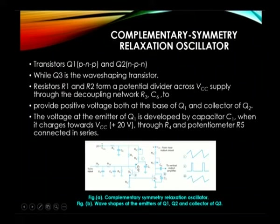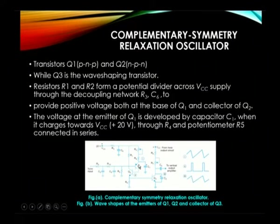Let us study the complementary symmetric relaxation oscillator. The circuit consists of Q1 and Q2. Q2 is the NPN transistor and Q1 is the PNP transistor.